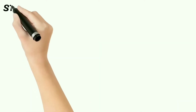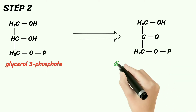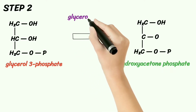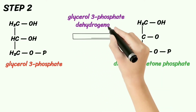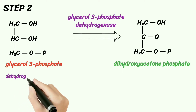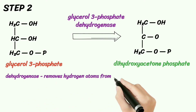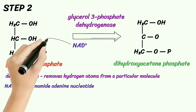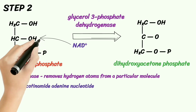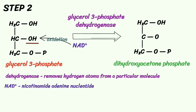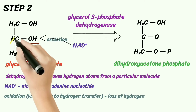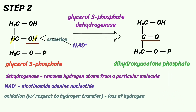The second step of glycerol metabolism involves the conversion of glycerol-3-phosphate to dihydroxyacetone phosphate. This is made possible by the enzyme glycerol-3-phosphate dehydrogenase. A dehydrogenase removes hydrogen atoms from a particular molecule. The reaction is aided by the coenzyme nicotinamide adenine dinucleotide, which causes oxidation of the secondary alcohol group. During oxidation, hydrogen atoms are lost, resulting in a double bond at the second carbon.